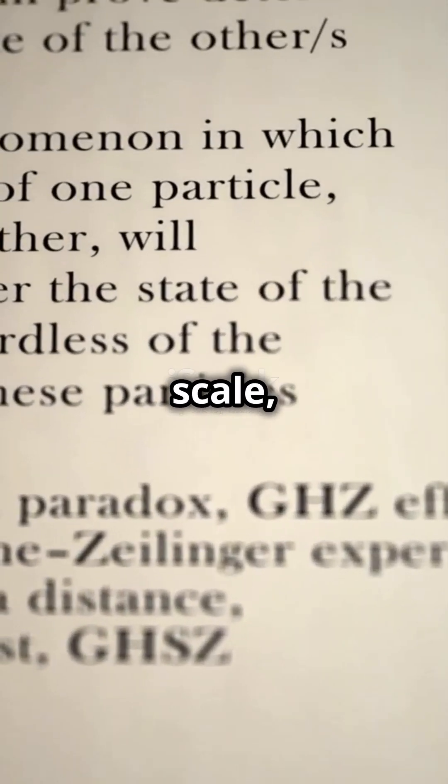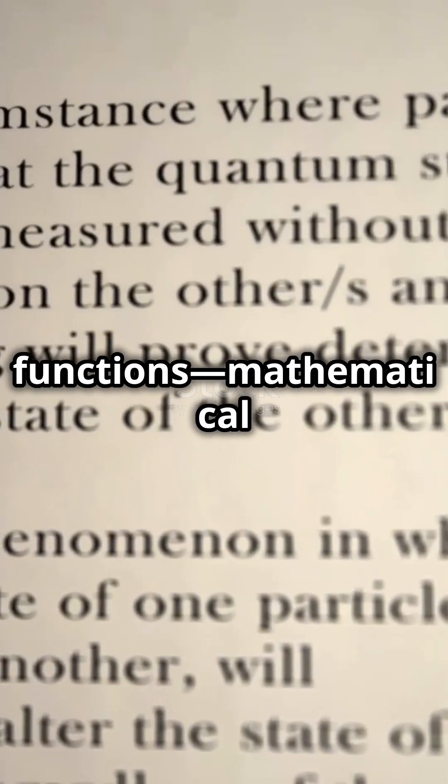At the quantum scale, particles are described by wave functions—mathematical probabilities of where they might be when a particle encounters a barrier.